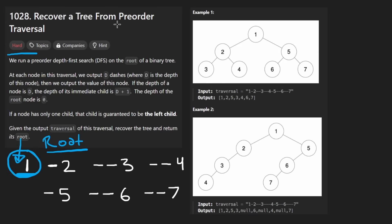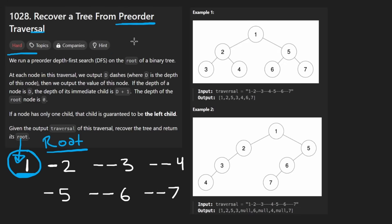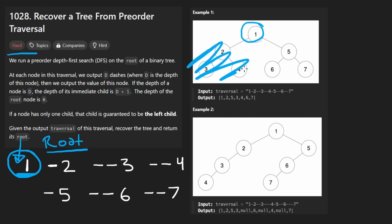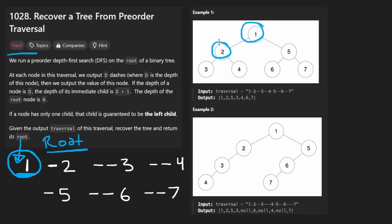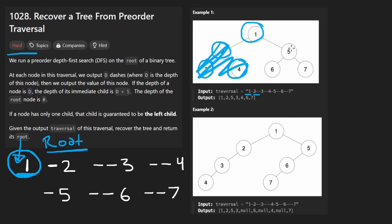We didn't even need the dashes to tell us the first node is the root because of how pre-order traversal works. Pre-order traversal means we traverse the root first, then recursively run pre-order on the left subtree, then after that entire subtree we run pre-order on the right subtree. So the order one, two, three matches pre-order: root first, then left side three, then four, then the right side five, six, seven.